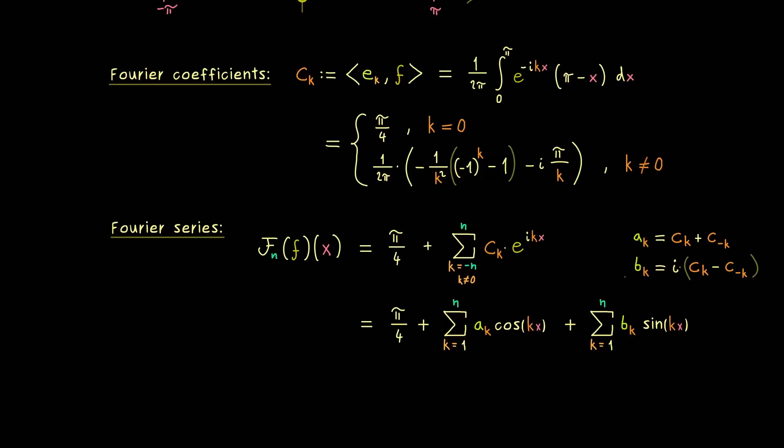Simply because in this case the coefficients aₖ and bₖ are real numbers as well. For example, if we calculate bₖ, we just get out 1/k. So this is quite simple, but on the other hand aₖ is a little bit longer. We get 1/π · 1/k² · (1 - (-1)^k).